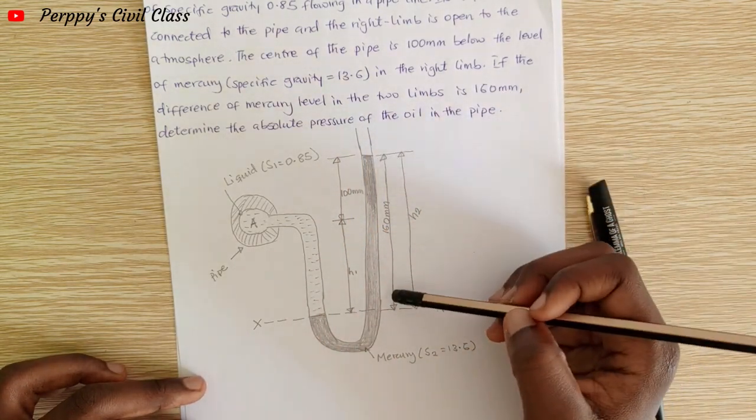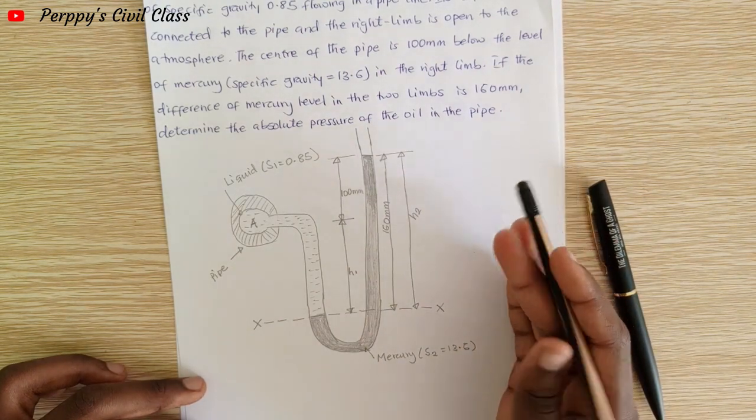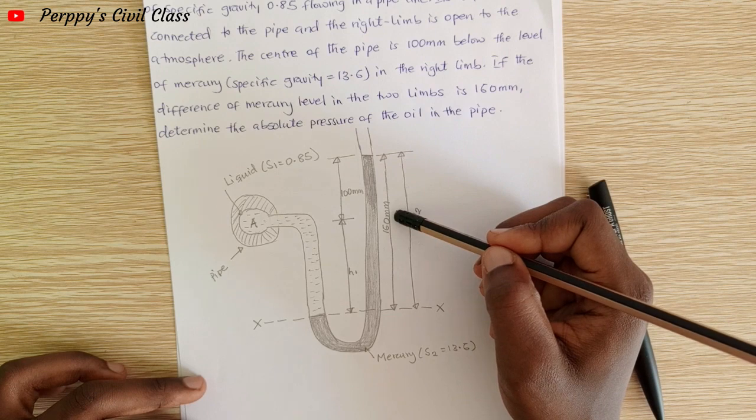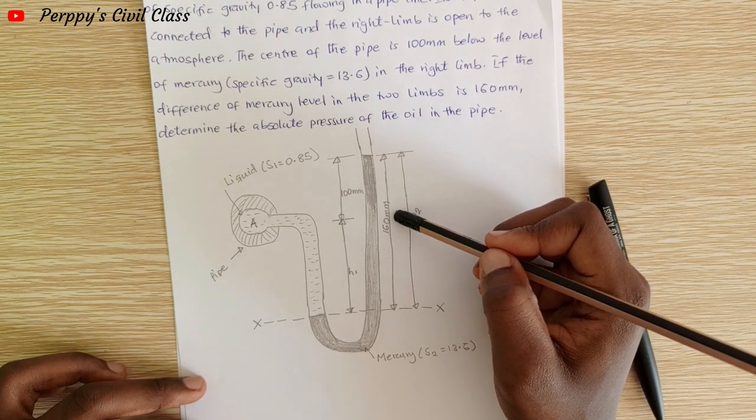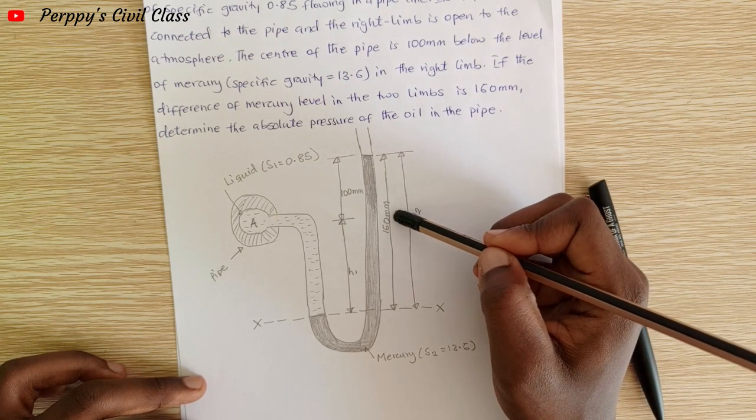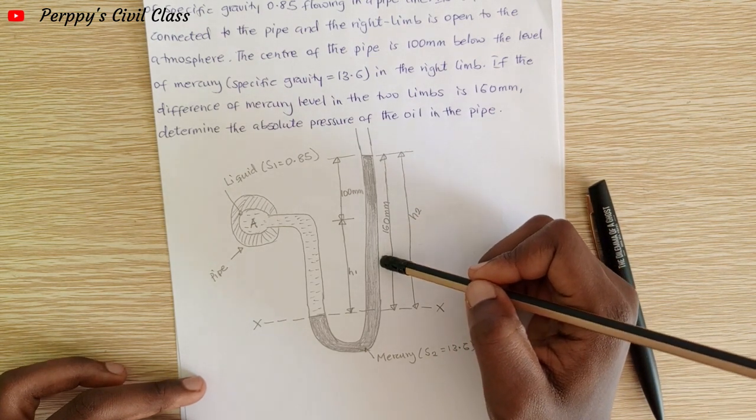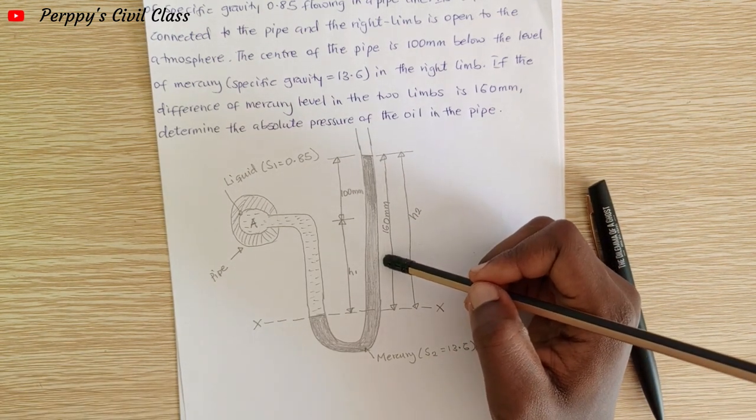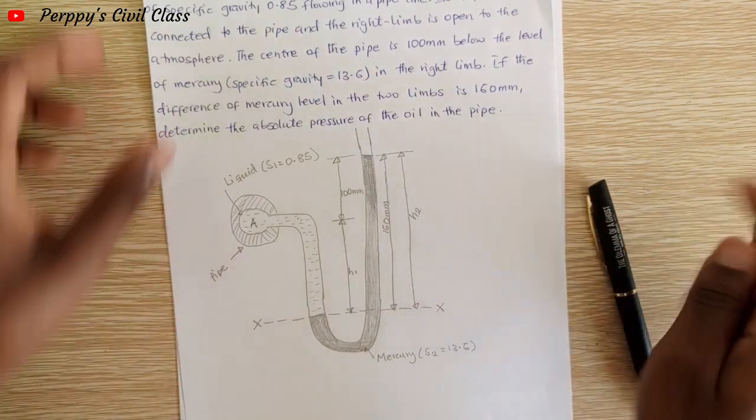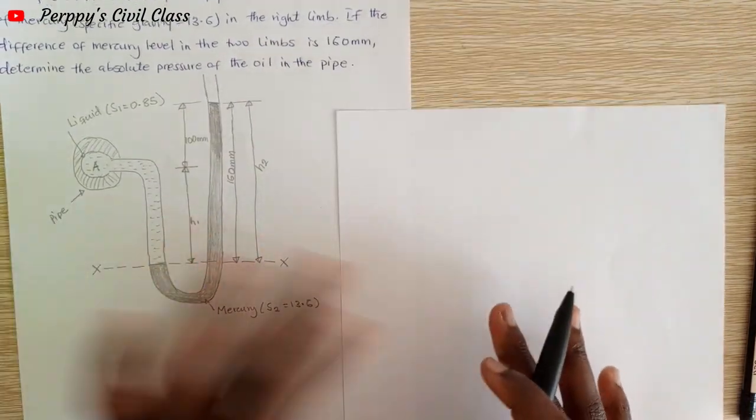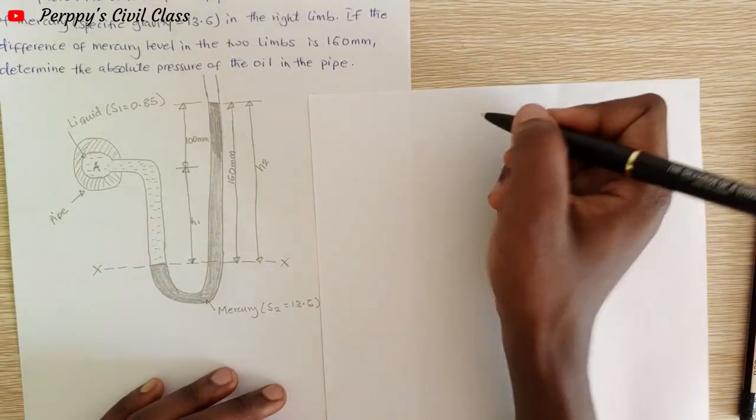The right limb of the mercury level is 160 millimeters. Determine the absolute pressure of the oil in the pipe. Let's start solving and put the question in so we can make reference to it.